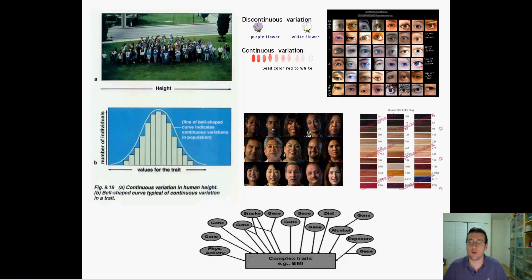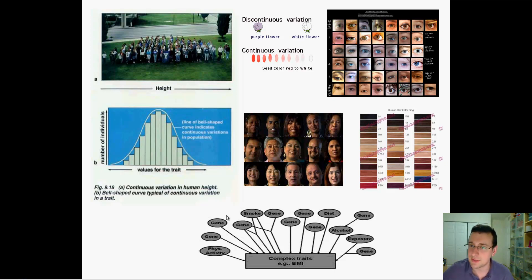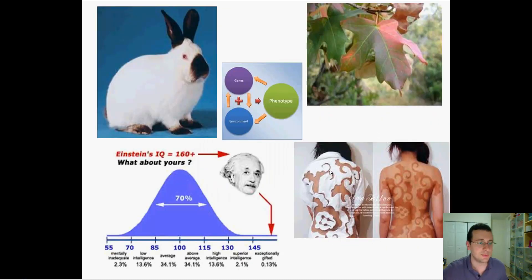There's also the idea of multifactorial traits — traits that depend not only on several genes but on many different factors, such as when those genes are developing and how they respond to environmental changes. For example, your body mass index depends on multiple genes that determine your metabolism, your taste for food, and other things. But it also depends on your diet, whether you smoke, whether you're exposed to alcohol, and whether you do physical activity. So environmental factors play into these genes, leading to many traits that can be changed by environmental changes.